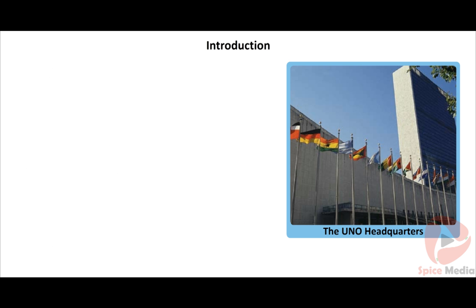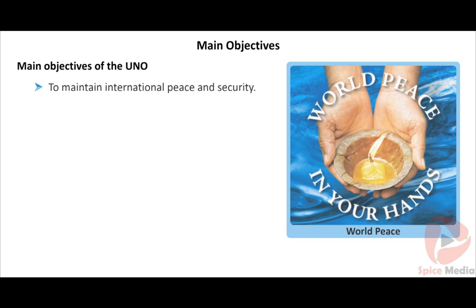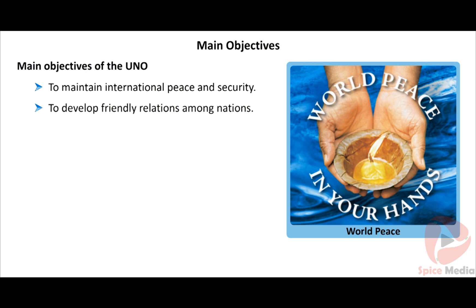On 26 June 1945 at San Francisco, the UN Charter was signed. On 24th October 1945, the UNO was established. Today the UNO has 192 members, with its headquarters at New York. The main objectives of the UNO are: to maintain international peace and security, and to develop friendly relations among nations.